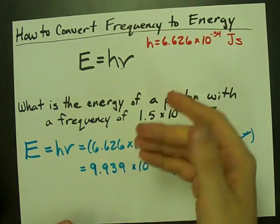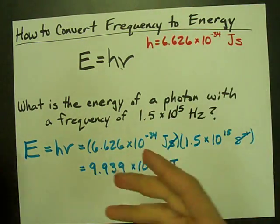And it's as easy as that to convert from frequency into wavelength. Just multiply by Planck's constant.